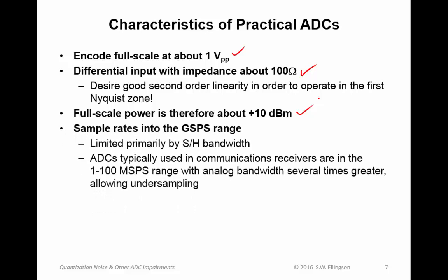Sample rates for practical ADCs go anywhere from hundreds of samples per second up into the gigasample per second range. The limitation is due to the bandwidth of sample and hold mechanisms. The ADCs used in communications receivers are typically in the range of about 1 to 100 megasamples per second these days. And they have analog bandwidth which is much greater, typically up to hundreds of megahertz. And this is to allow undersampling.